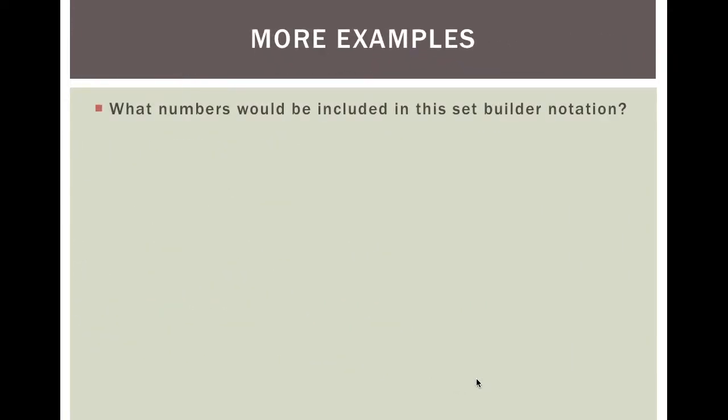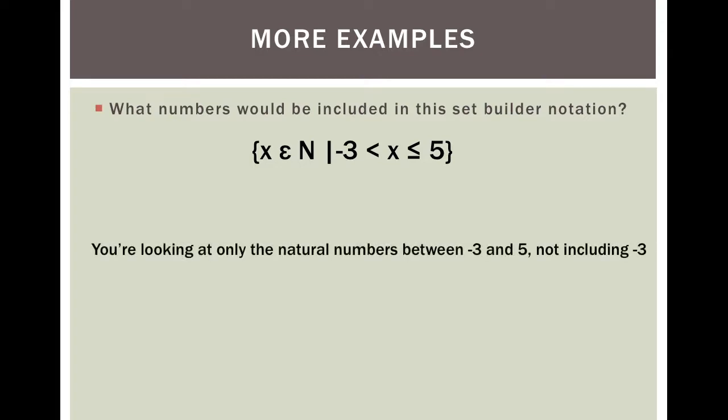Here are some more examples. What numbers would be included in this set builder notation? X is in the natural numbers such that X is between negative 3 and 5. Natural numbers do not include negatives, so in this case it would only be 1, 2, 3, 4, and 5 that make the set builder notation true.